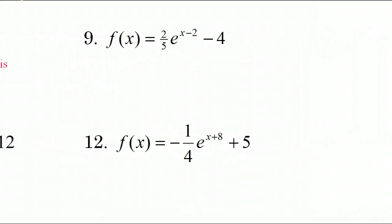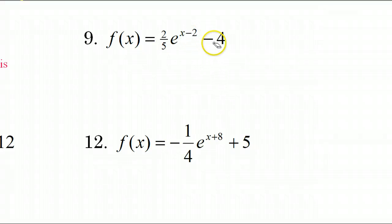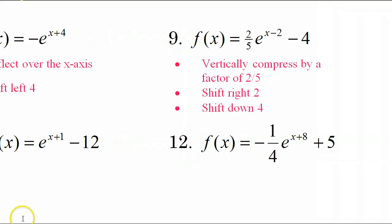Looking at number 9, I see three transformations. Because of this two-fifths in the front, this is going to be either a vertical stretch or a vertical compression. If this is bigger than 1 it will be a vertical stretch; if it's less than 1 it will be a compression — meaning it's being squished down. This is less than 1, so this would be a vertical compression. This minus 2 is going to be a shift to the right 2, and this minus 4 will be down 4. So this is how you would describe those three transformations.